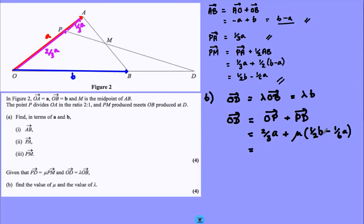Tidying this up. Mu over 2B. And A's, what have I got? 2 thirds of A. Minus mu over 6A.